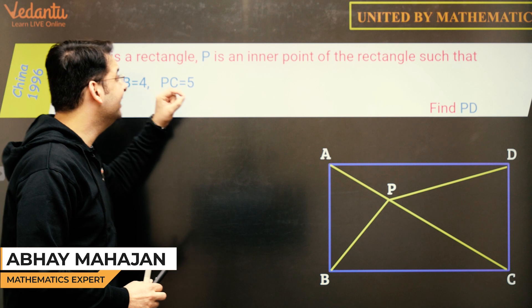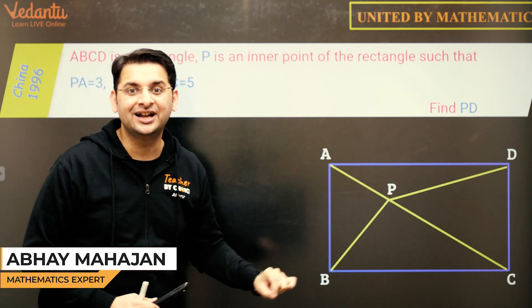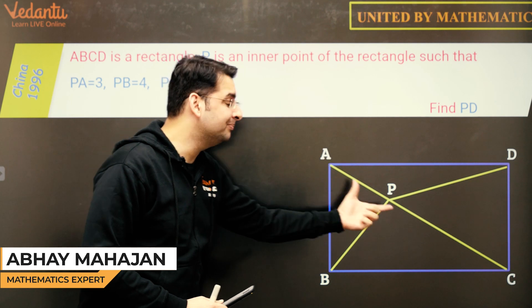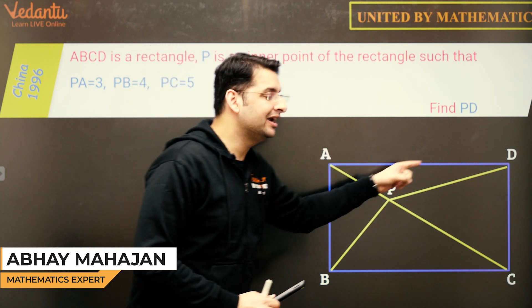The question says, if P is a point inside a rectangle ABCD such that PA is 3, PB is 4 and PC is 5, you need to find PD.